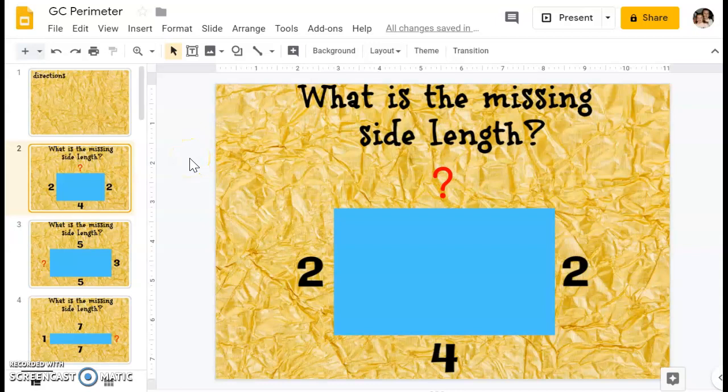Today we're looking at perimeter, and perimeter is how long the outside of an object is, a 2D object that is.